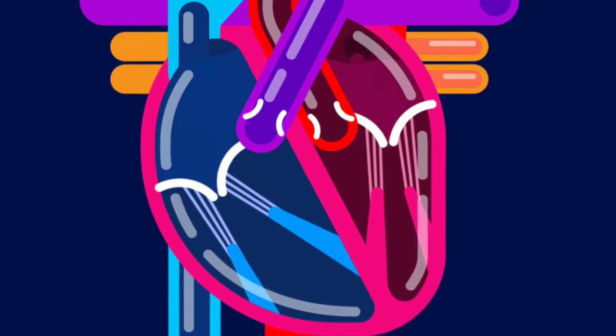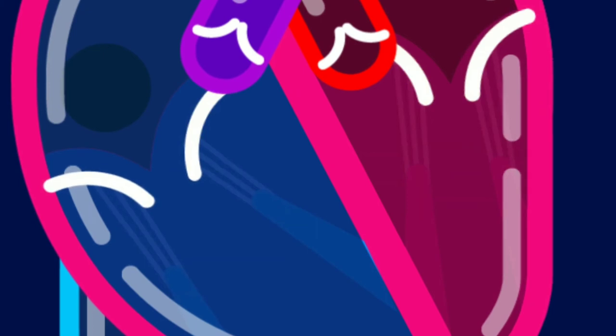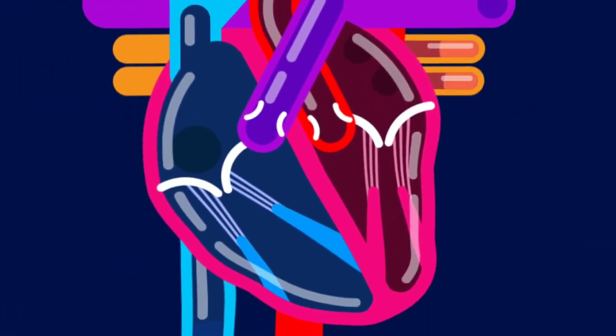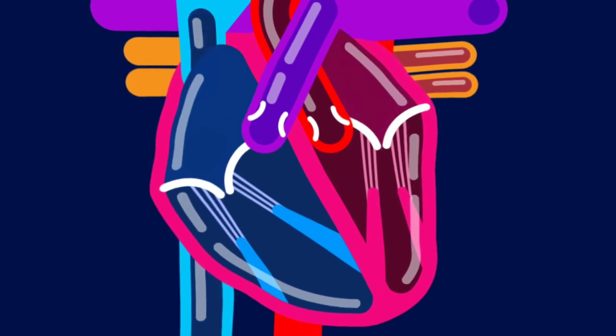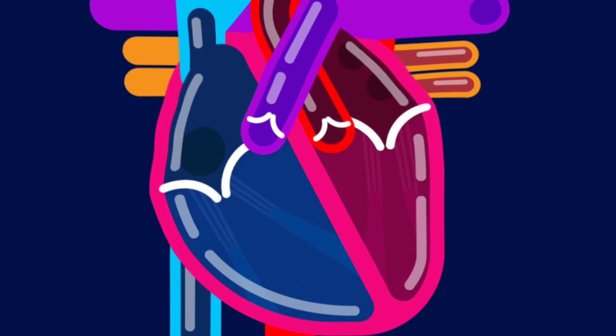The blood flows into the ventricles. The mitral and tricuspid valves open and semilunar valves close. During atrial systole, muscles of both atria contract and both ventricles relax. Again, the blood flows into the ventricles.